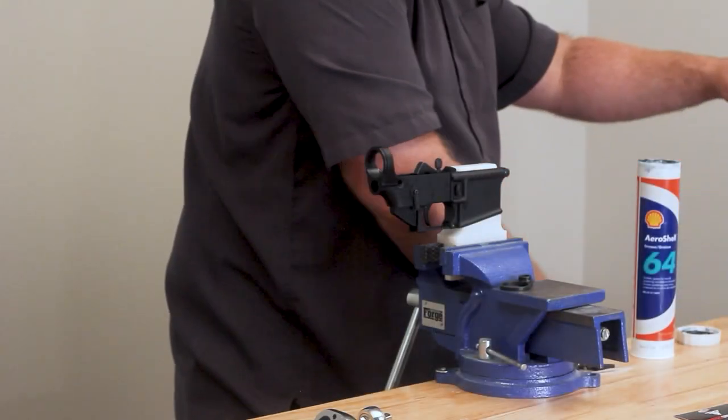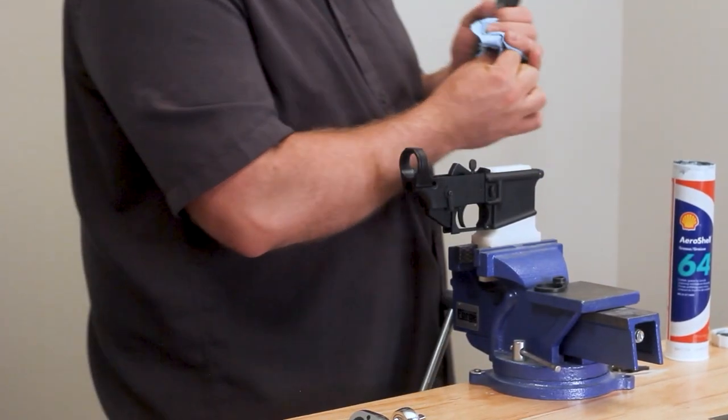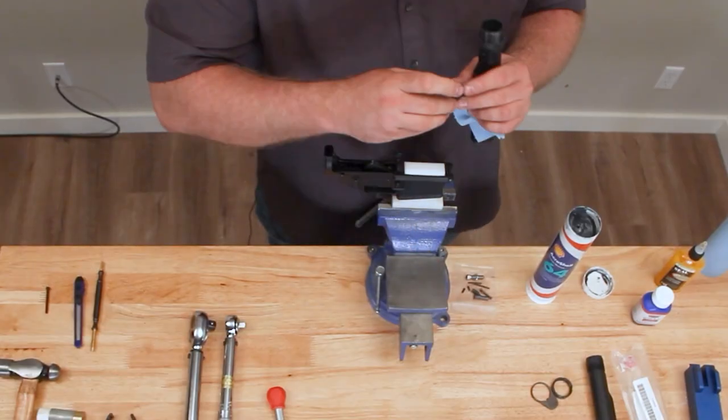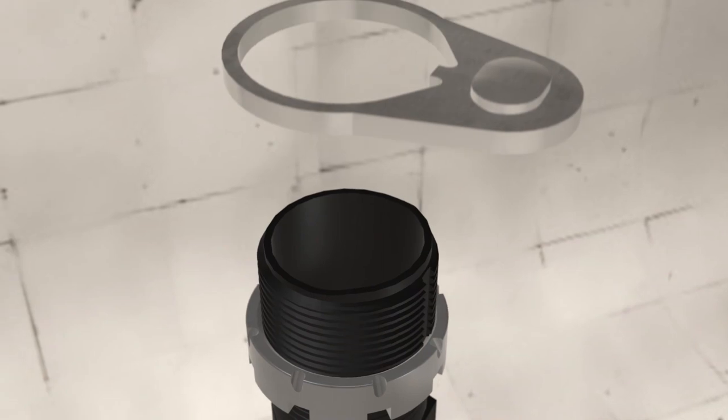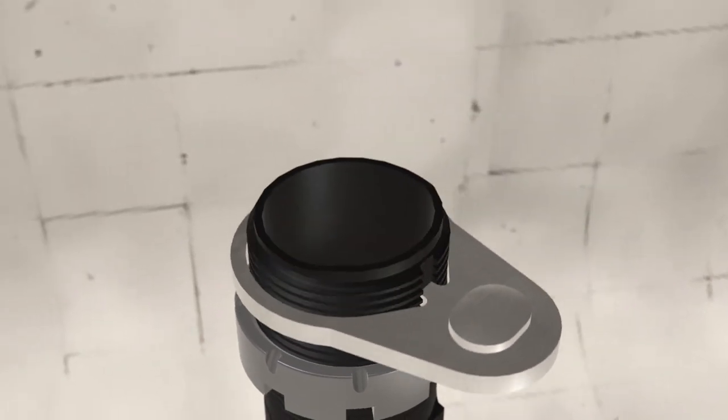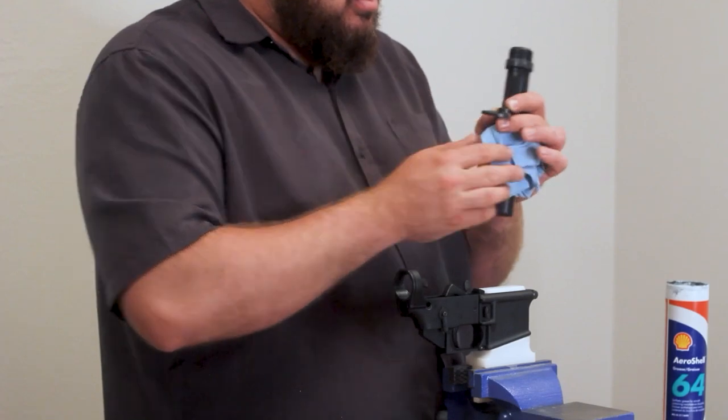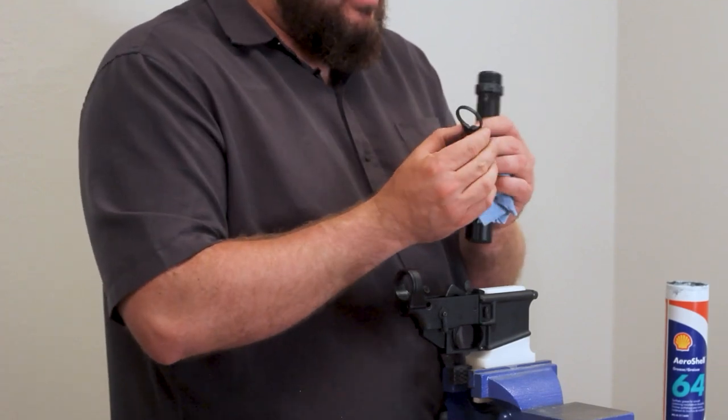The other place where you want to make sure you put a little grease is going to be on the flats between the castle nut and the end plate. Again, we don't want those staking notches to dig or gall on there. We want it to move freely.